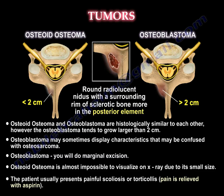Osteoid osteoma is very hard to see on an X-ray because of its small size, and usually the patient will present with painful scoliosis or torticollis. The pain is usually relieved by aspirin.